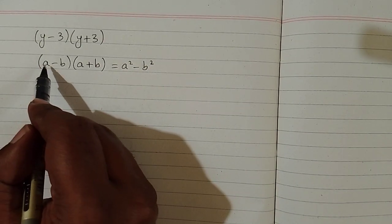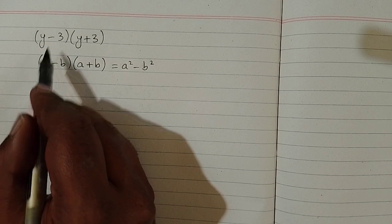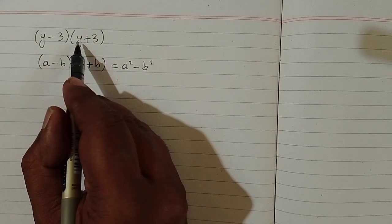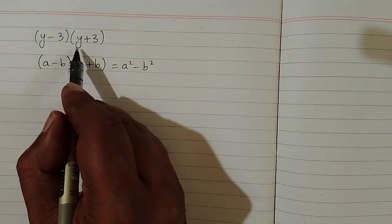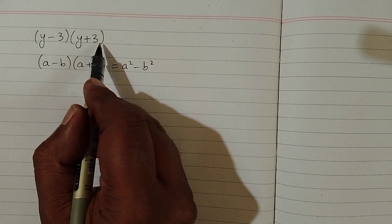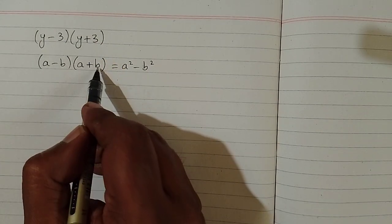We can see that we have y in place of a, then minus sign and 3 in place of b. And in the second factor we have y in place of a, then plus sign, and then we have 3 in place of b.